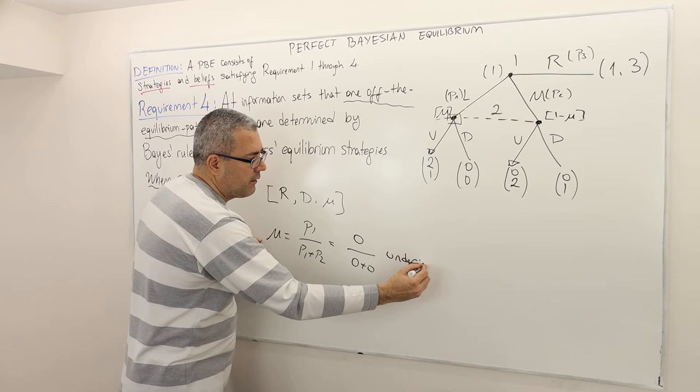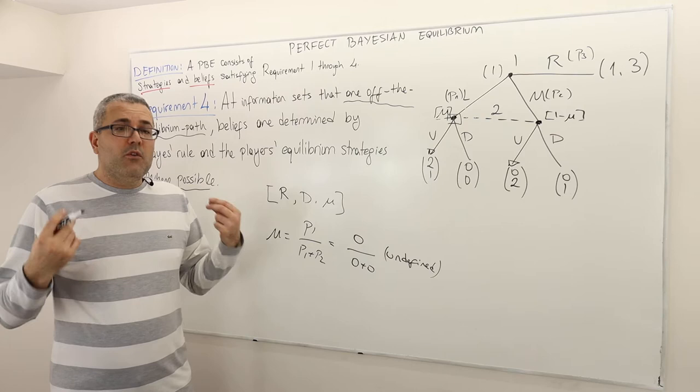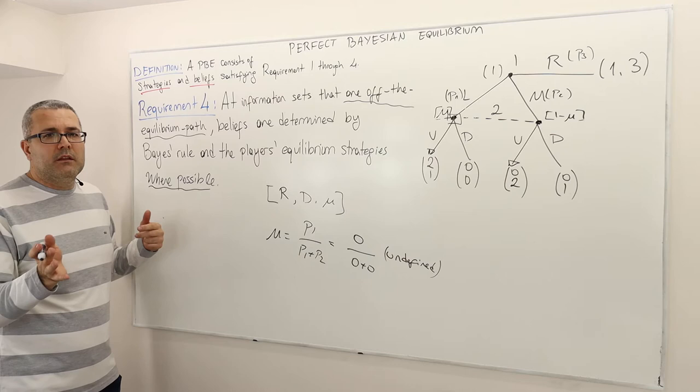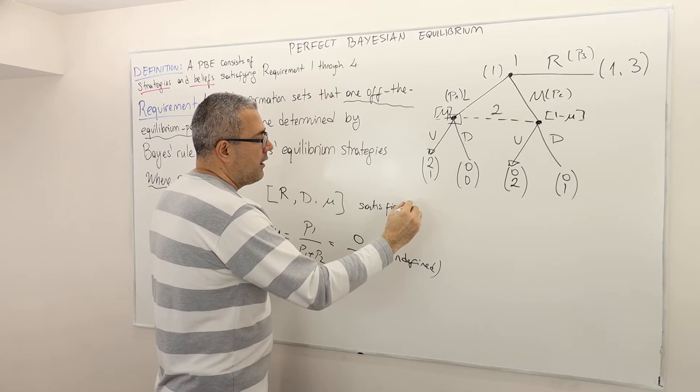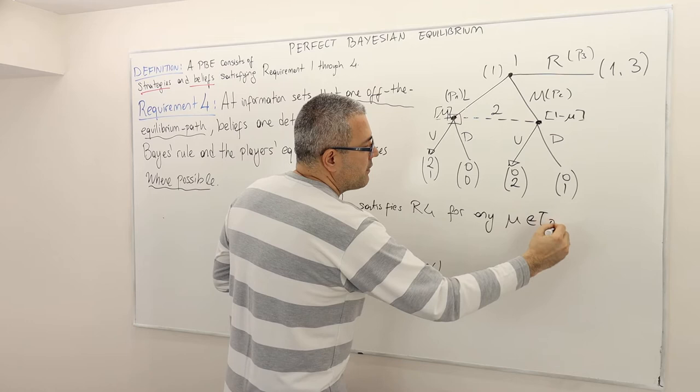So what does that mean? That means you can't really use Bayes' rule. Requirement four says: don't worry about it then — mu can be anything. So this strategy profile satisfies requirement four for any mu in between zero and one. Obviously, mu is a belief, so it has to be between zero and one.